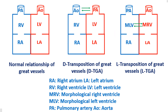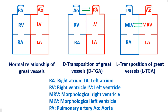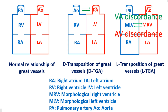Ventricular-arterial relationships are also described. In usual dextro-transposition of great arteries, there is atrioventricular concordance and ventricular-arterial discordance. In corrected transposition, there is both atrioventricular and ventricular-arterial discordance, so that it is physiologically corrected. Right atrial blood reaches the pulmonary artery through the left ventricle, and left atrial blood reaches the aorta through the right ventricle.